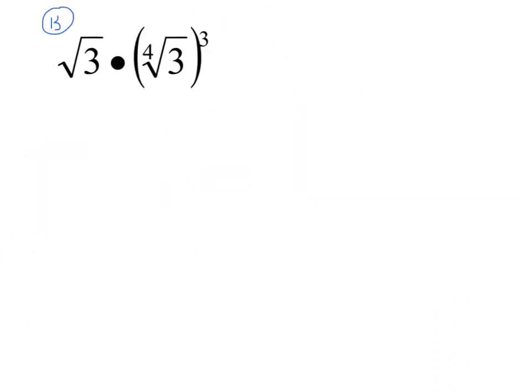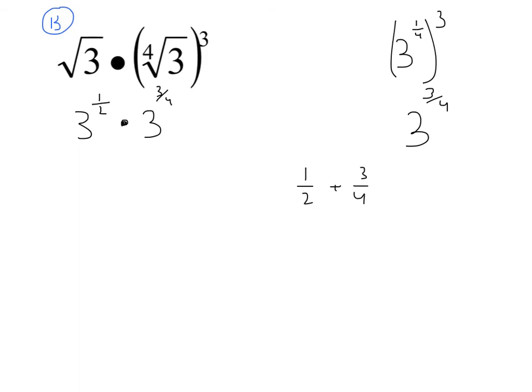One more — try this one on your own; it's a little trickier. I notice I have a square root and a fourth root, so they do not have the same type of root. I rewrite using fractional exponents: the square root of 3 is 3 to the one-half. The second term is 3 to the one-fourth, that whole thing cubed, which is 3 to the three-fourths. So I have 3 to the one-half times 3 to the three-fourths. Adding exponents: one-half plus three-fourths, with common denominator 4, gives two-fourths plus three-fourths, which is five-fourths. The answer is 3 to the five-fourths.